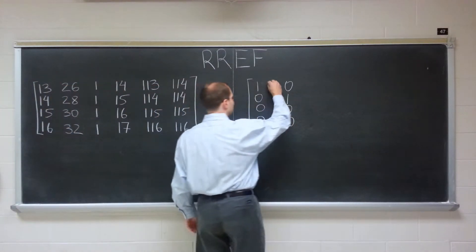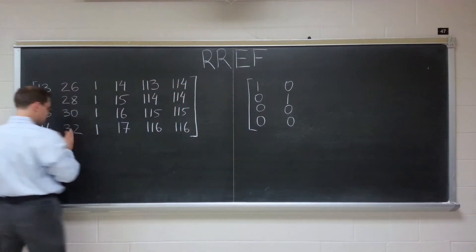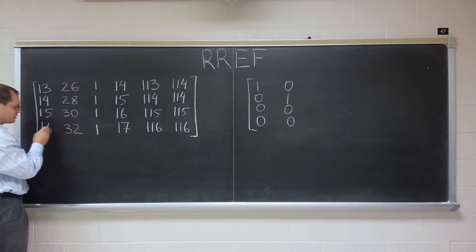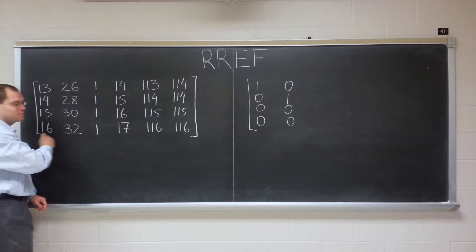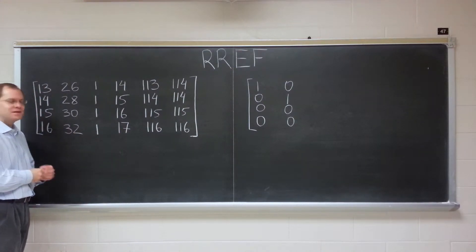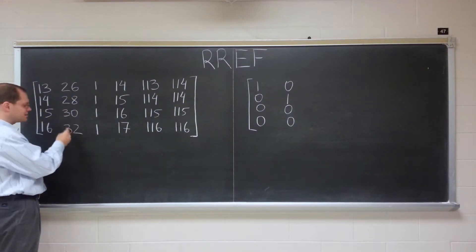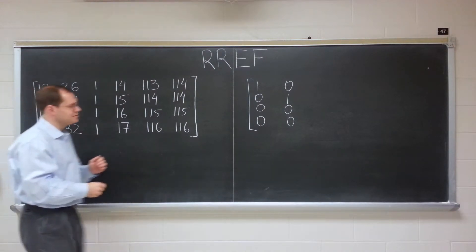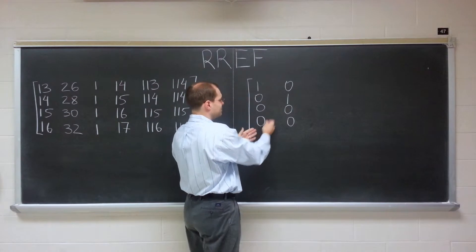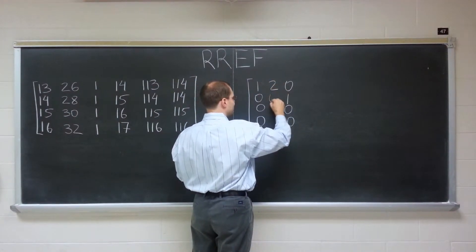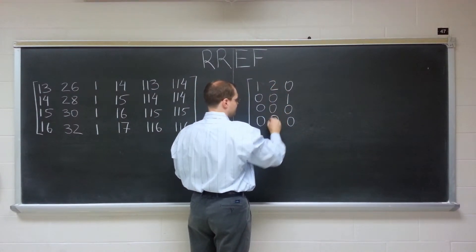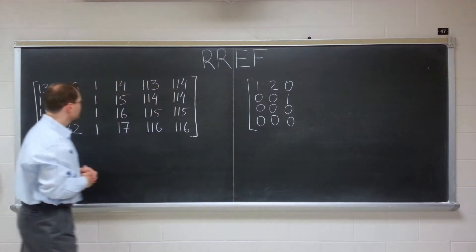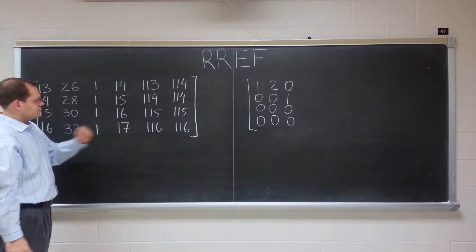Okay, so now let's fill in this non-pivot column. Well, the second column here is twice the first column. And in the process of Gauss elimination, that relationship would be preserved. That means that in the final form, this column will still be twice this column. And if this column is twice this one, and this one becomes this, well then the second column must become this.